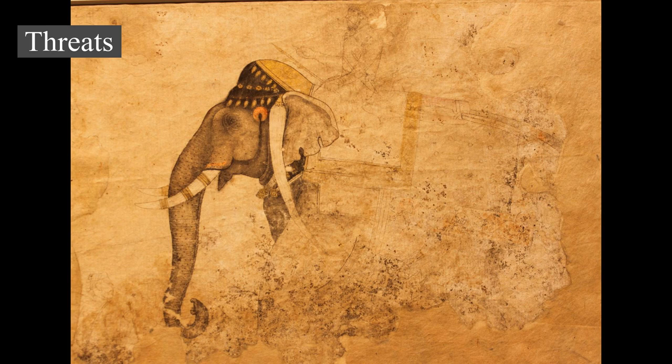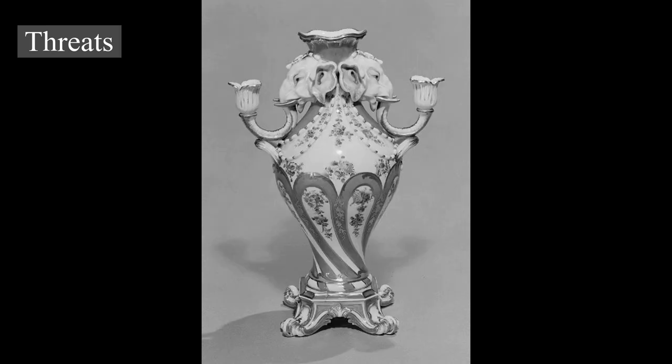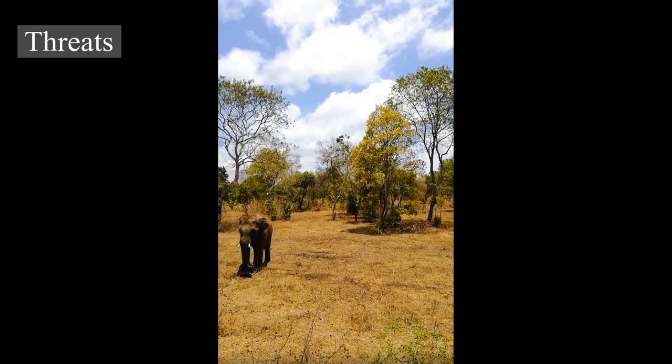Asian elephants are potentially less vulnerable to the ivory trade as females usually lack tusks. Still, members of the species have been killed for their ivory in some areas. China was the biggest market for poached ivory, but announced they would phase out the legal domestic manufacture and sale of ivory products in May 2015, and in September 2015, China and the United States said they would enact a nearly complete ban on the import and export of ivory due to causes of extinction.